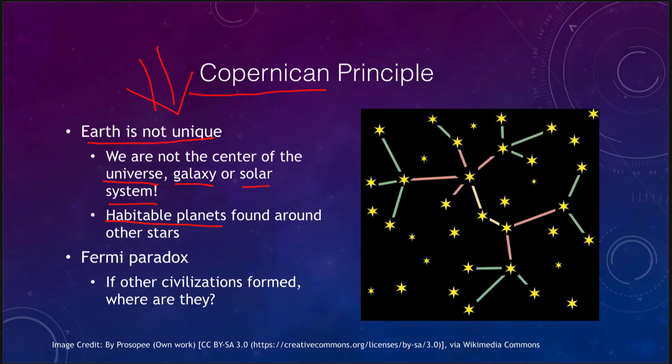There could be more earth-like planets out there in the universe. In fact, we've detected a number of earth-type planets — we just don't know whether life has evolved elsewhere. This leads right to a paradox that we call the Fermi paradox, which was proposed by Enrico Fermi. He suggested that if other civilizations formed, why haven't we found them yet? Why are they not here visiting us?